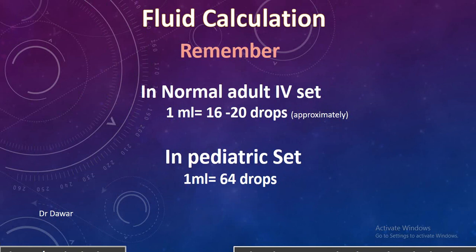First of all, I have given you two sentences in the very first slide and I have written that it is useful to memorize them. In a normal adult IV set, 1 milliliter is equal to 16 drops per minute — that is approximately. In a pediatric set, 1 milliliter is equal to 64 drops per minute.